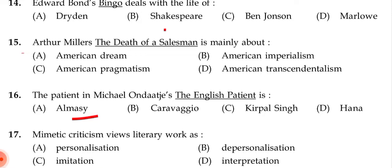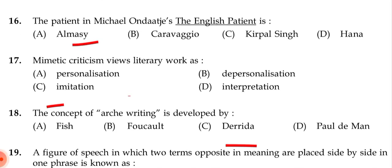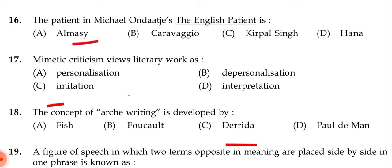Next question: The English person in Michael Ondaatje's 'The English Patient' is — (a) Almasy, (b) Caravaggio, (c) Kirpal Singh, (d) Hannah. The correct answer is (a) Almasy.